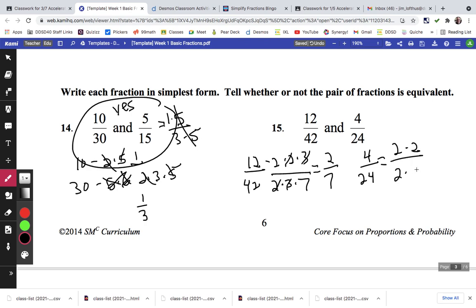So 4 twenty-fourths is equal to 2 times 2. 24 is 2 times 2 times 2 times 3. Those all cancel out. There's a multiply by 1 there. So this is equal to 1 sixth. So no, 2 sevenths does not equal 1 sixth. So that answer is no.